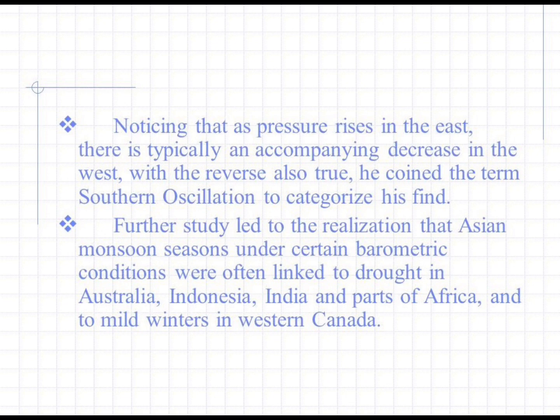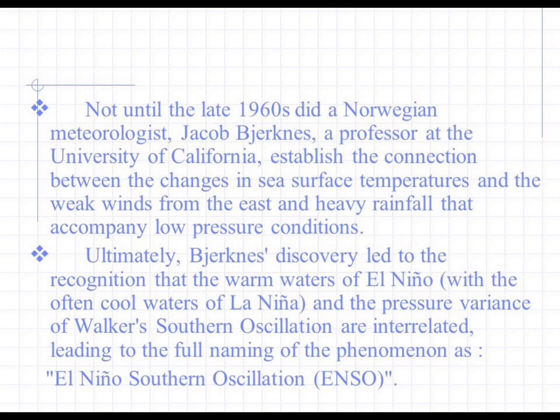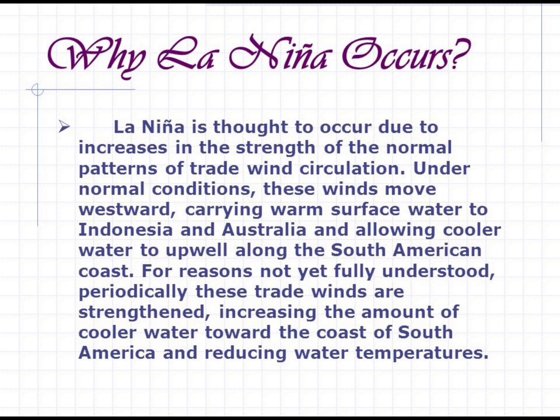Not until the late 1960s did Norwegian meteorologist Jacob Bjerknes, a professor at the University of California, establish the connection between changes in sea surface temperatures and the weak winds from the east and heavy rainfall accompanying low pressure conditions. Ultimately, Bjerknes' discovery led to the recognition that the warm waters of El Niño, the often cool waters of La Niña, and the pressure variance of Walker's Southern Oscillation are interrelated, leading to the full naming of the phenomenon as El Niño Southern Oscillation (ENSO).